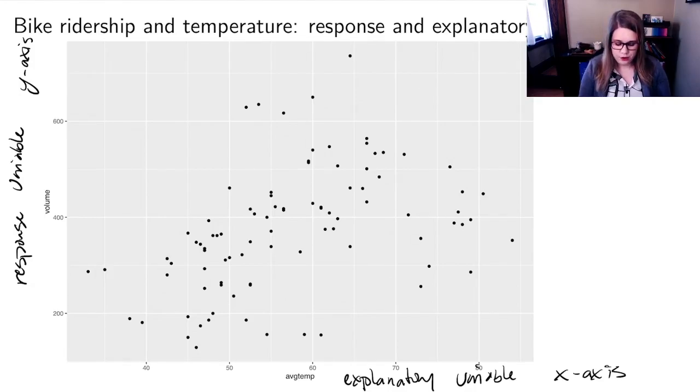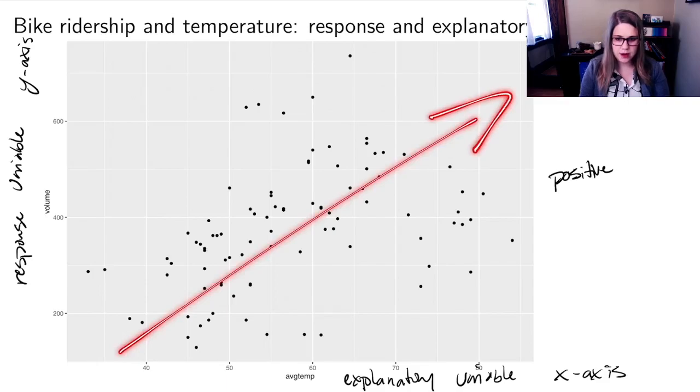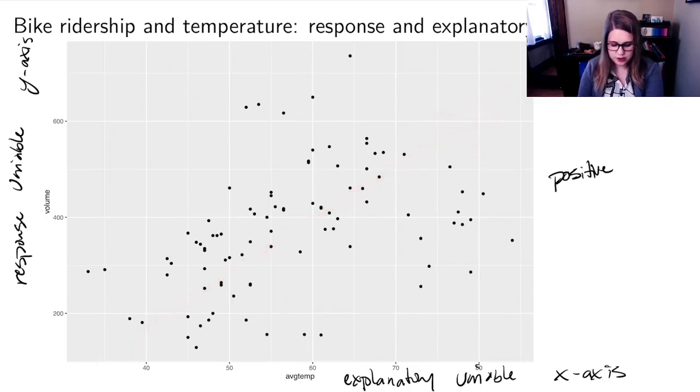We've thought about strength and direction of association. If I had to characterize this, I would say that this was a positive association. It looks to me that as the temperature goes up, the volume goes up. It's not a super strong association, it's maybe moderate, weak, but I think that there is an association there. It's not just like randomness. But we're going to try and look further into that.